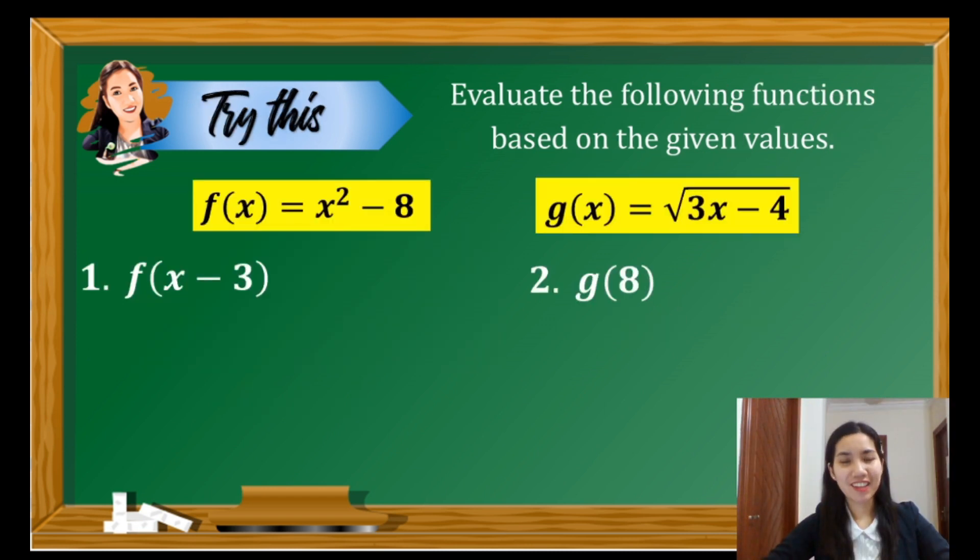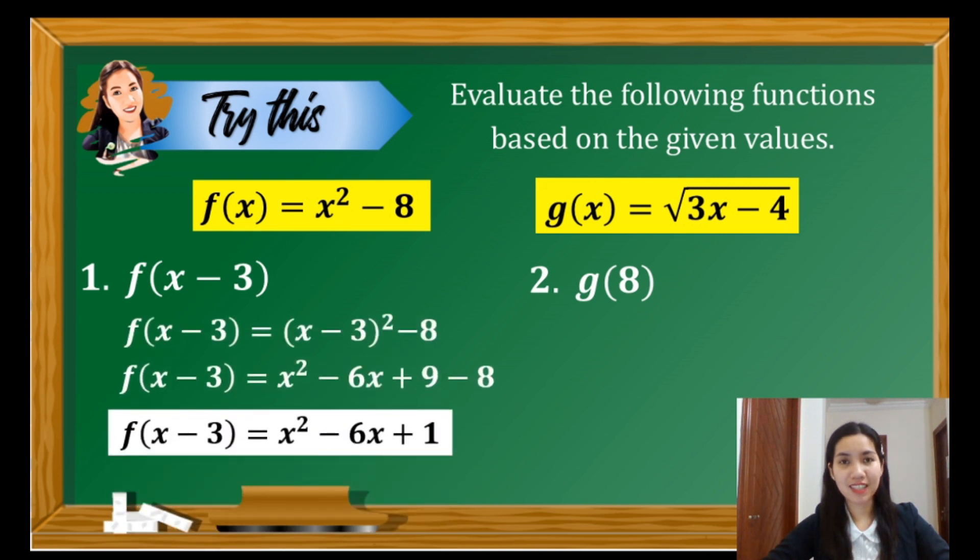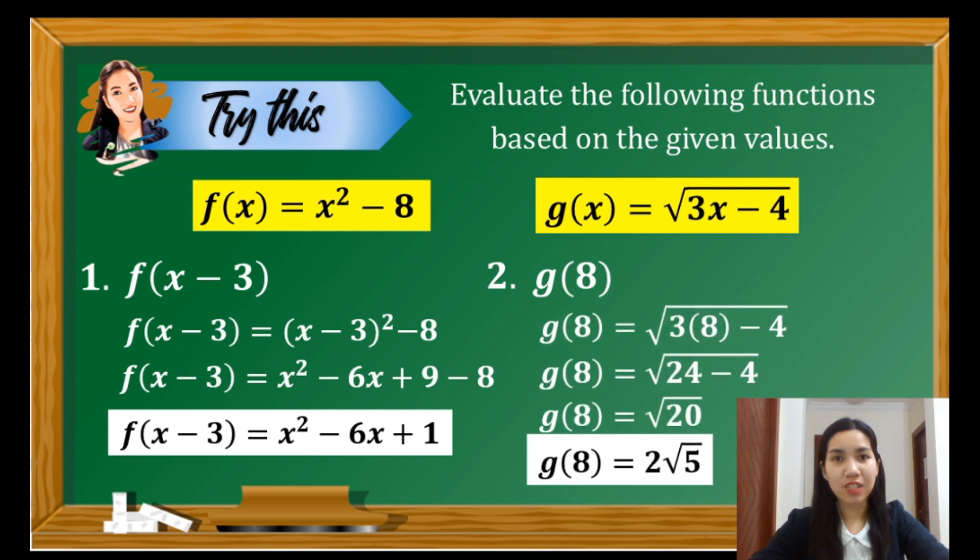This time, it is your turn to apply what you have learned from our discussion. You may pause the video so you can answer the questions. Let's check your answers. Item number 1, the answer is x² - 6x + 1. For item number 2, the answer is 2√5.